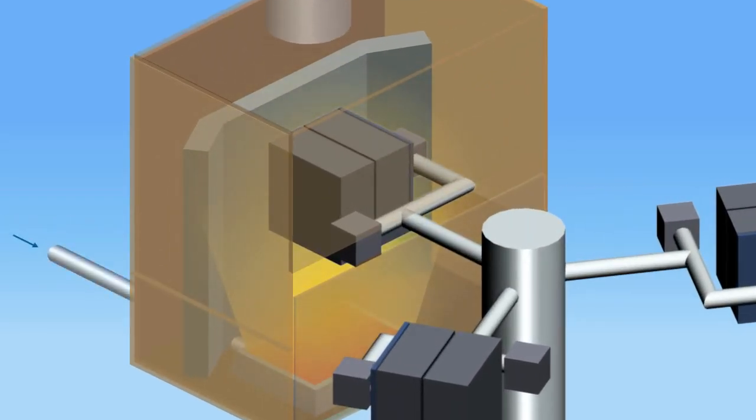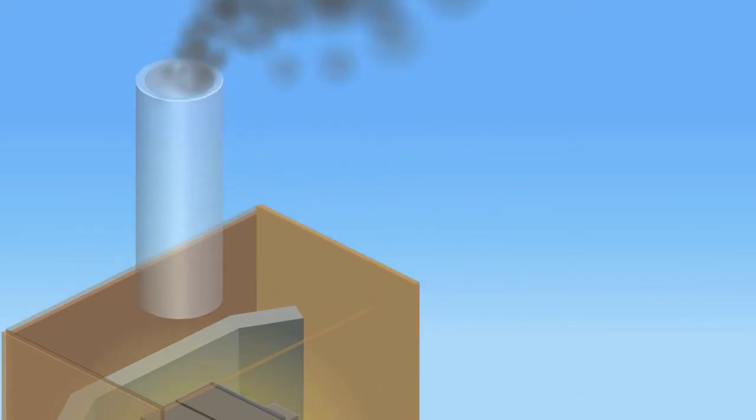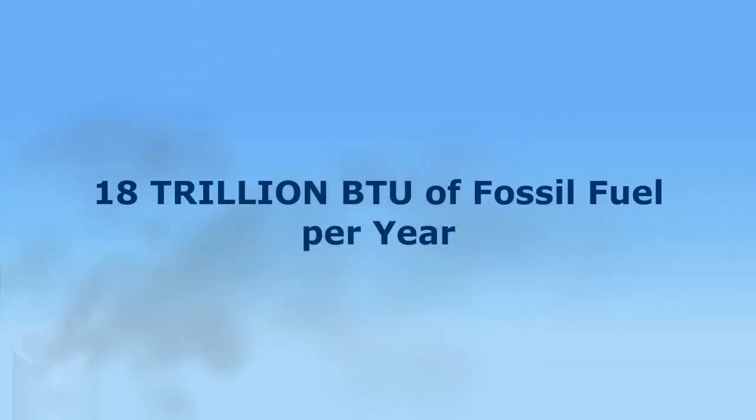It uses natural gas or sometimes kerosene for heat. Rotational molding burns over 18 trillion BTUs of fossil fuel and generates over 2 billion pounds of greenhouse gases each year.